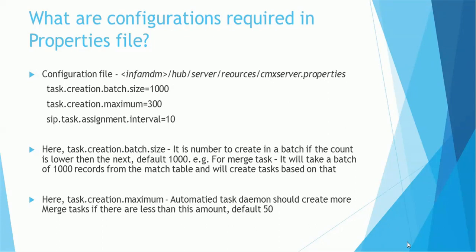The first property, task.creation.batch.size, is the number of tasks to create in a batch. This is the batch size defined to create the tasks. For merge tasks, it will take a batch of 1000 records from the match table and create tasks based on the records picked. That is the batch size — this batch has to be completely processed, and then the next batch will be processed.